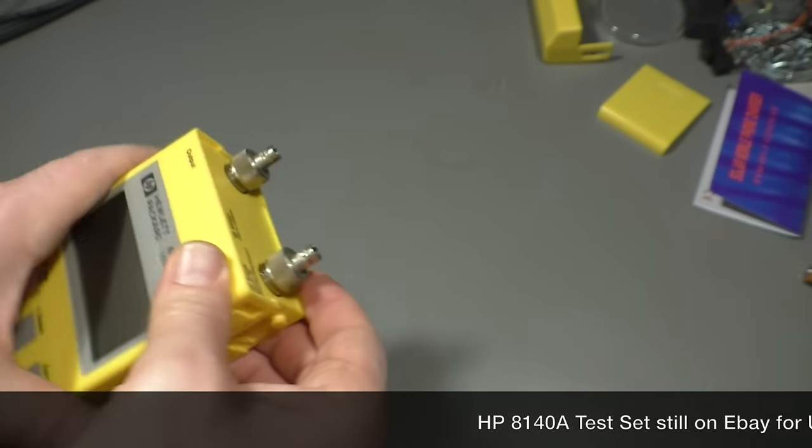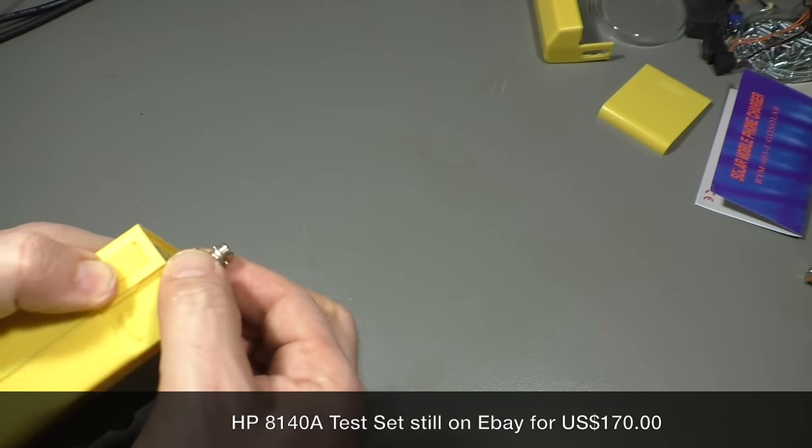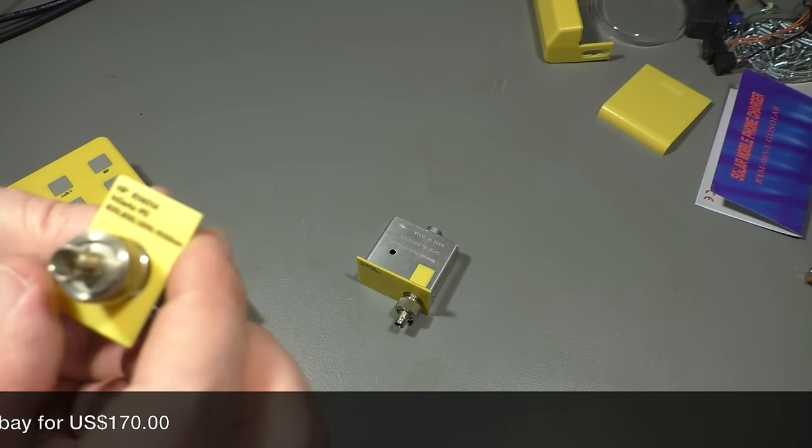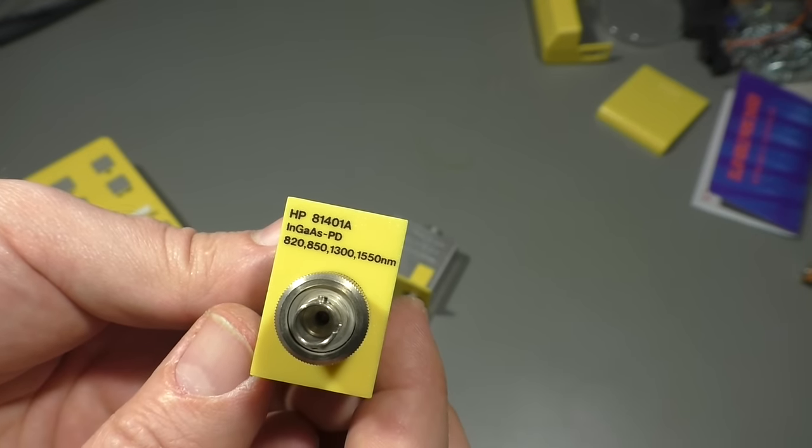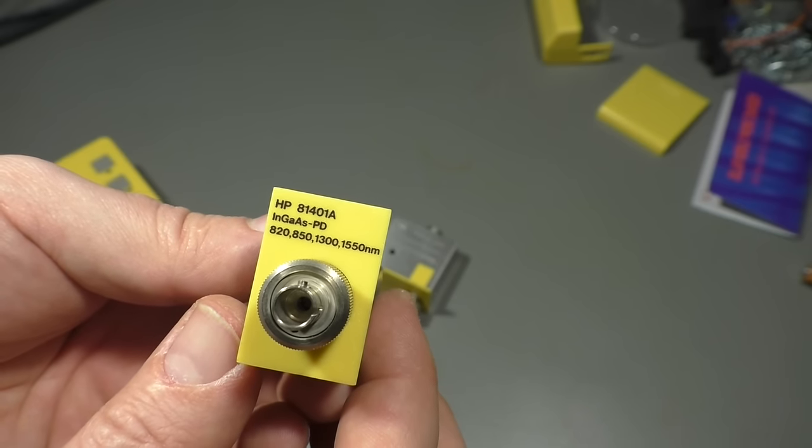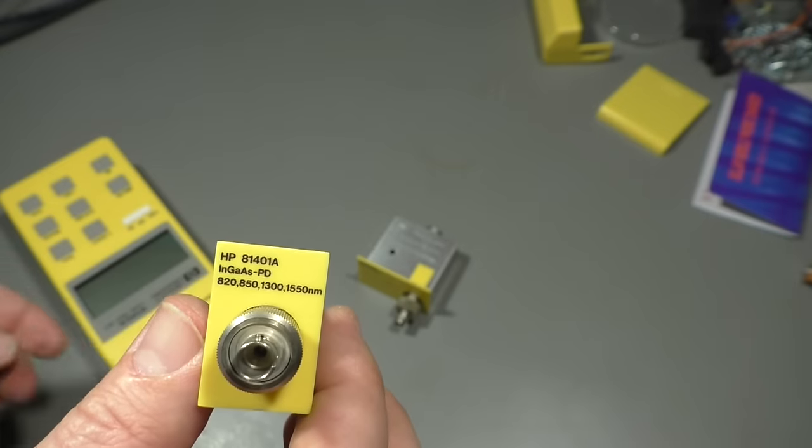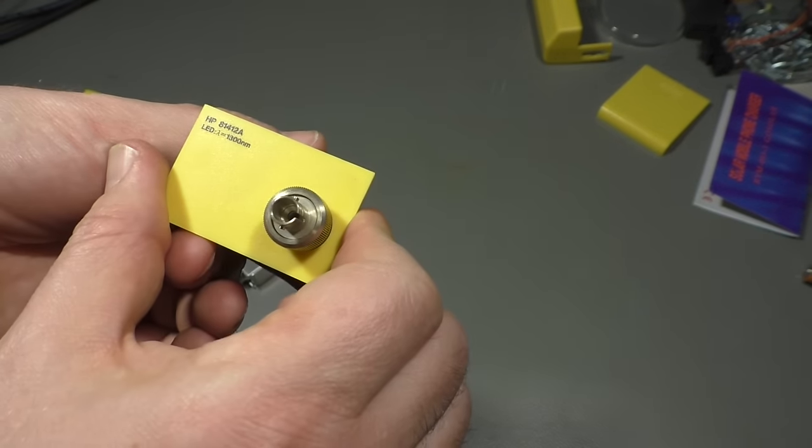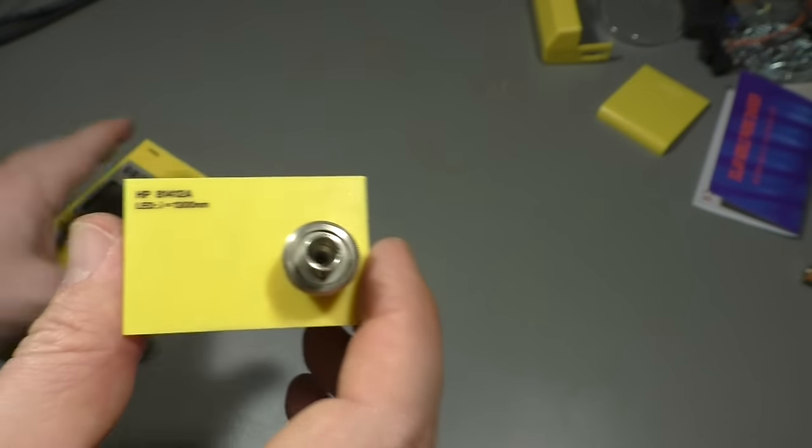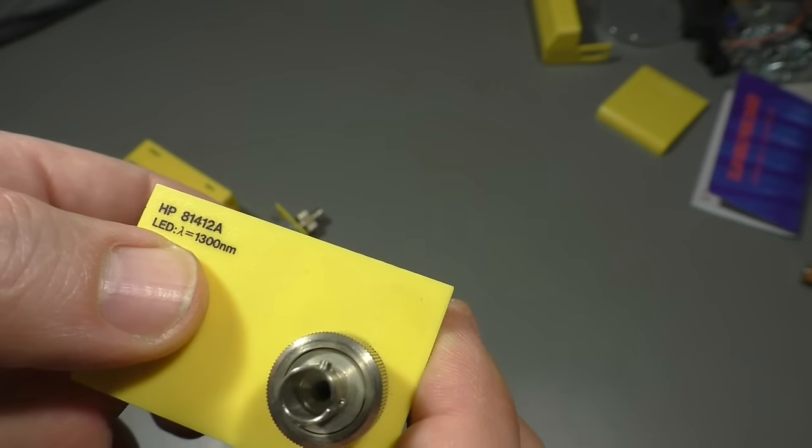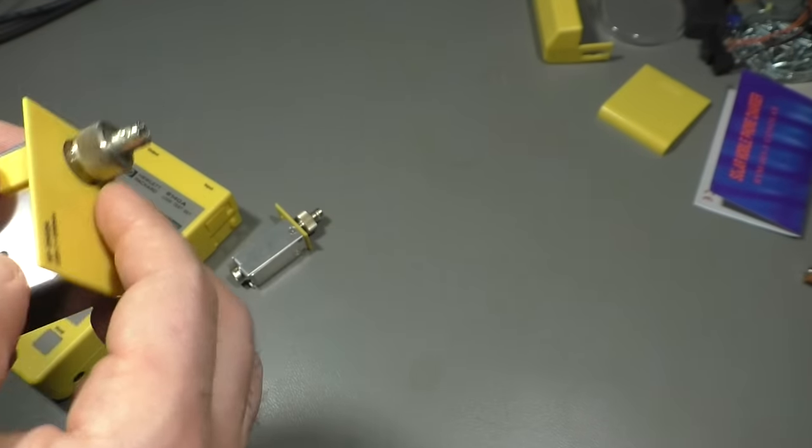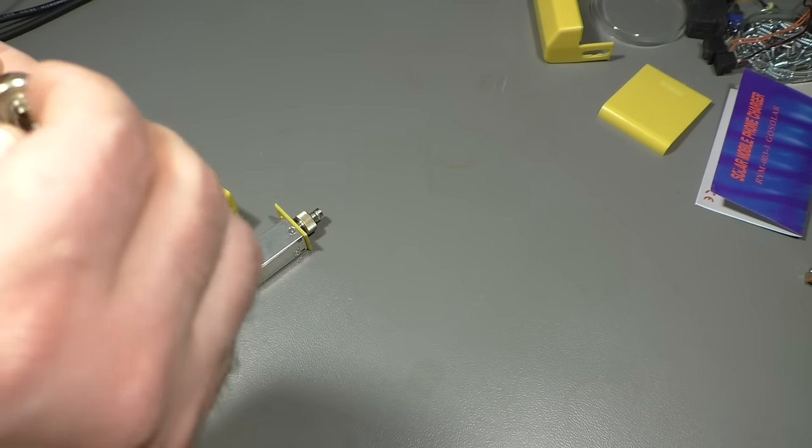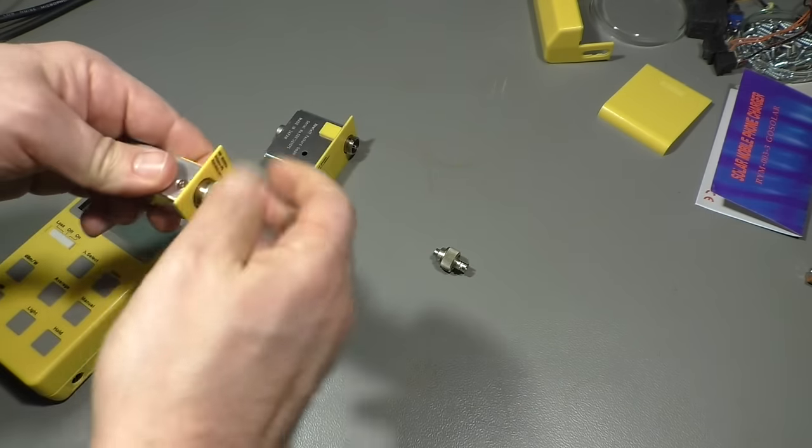So it's the 8140A test set, it's from 1990 about that, and it has two modules here. One input module, it has an indium gallium arsenide photo detector maybe for a couple of wavelengths. This wavelength you can select with the button here, wavelength select. Then we have an LED, this is the output module. It sends some light at 1300 nanometers which is in the infrared region. It has an adapter for the SC connector type. There is the same adapter here.